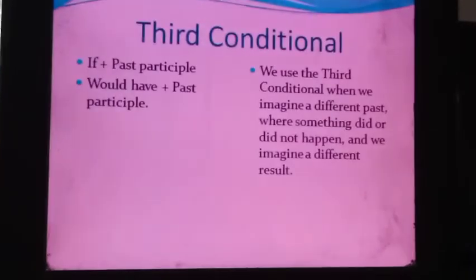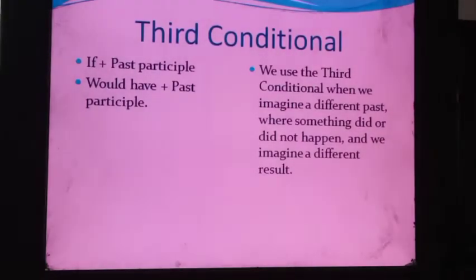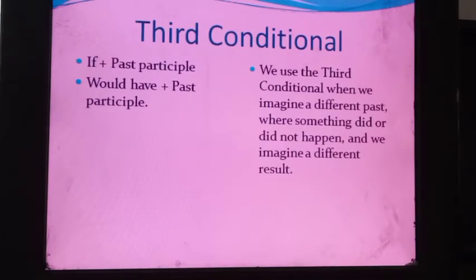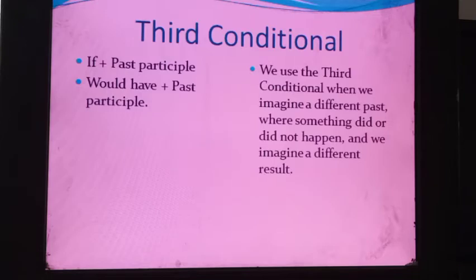In the third conditional, you can see there is a formula: if plus past participle, and the second part is 'would have' plus past participle. Third conditional has two types of sentences. In the first type, the sentence starts from the if clause. In the second type it becomes opposite — the first part starts from the main clause and the second part starts from the if clause. The third form of the verb, past participle, is used in this type of sentence.